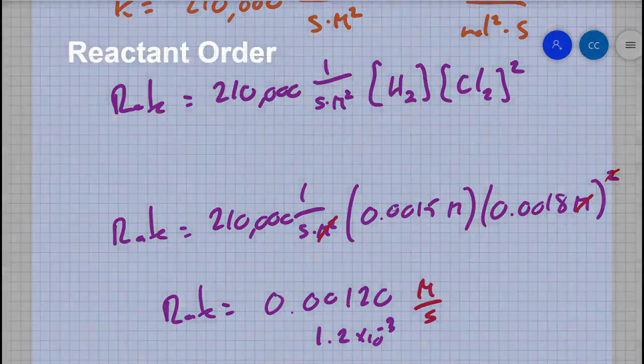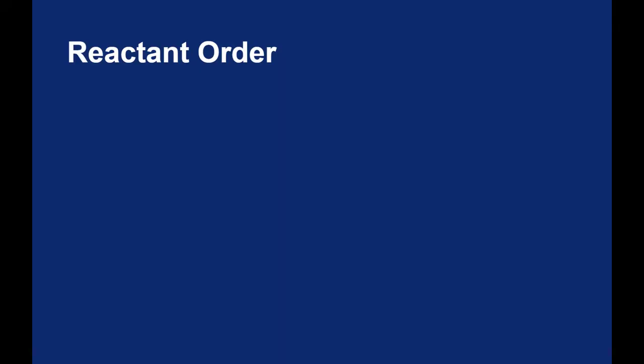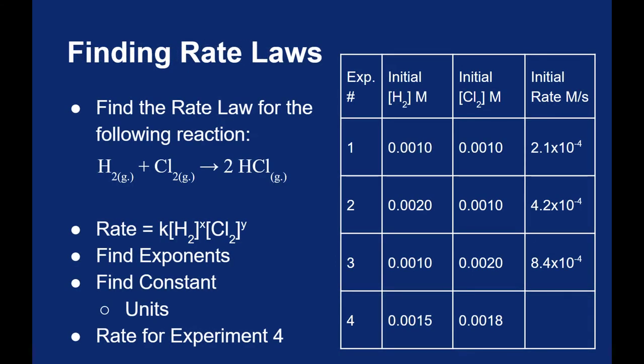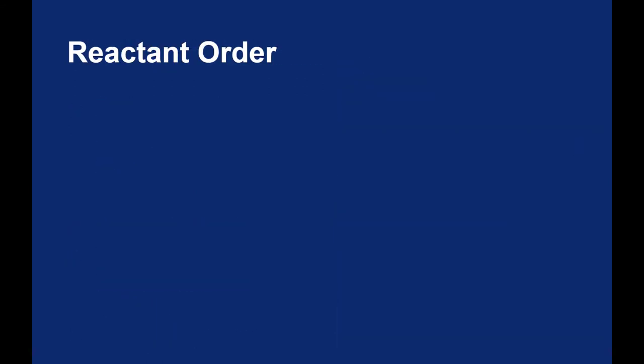To close, let's discuss reactant order. The order of a reactant refers to its exponent in the rate law. In our example, hydrogen was a first order reactant and chlorine was a second order reactant. Reactant orders are normally whole numbers — first order, second order, or even zeroth order — though fractional or decimal orders are possible. We'll stick to whole numbers in our work.